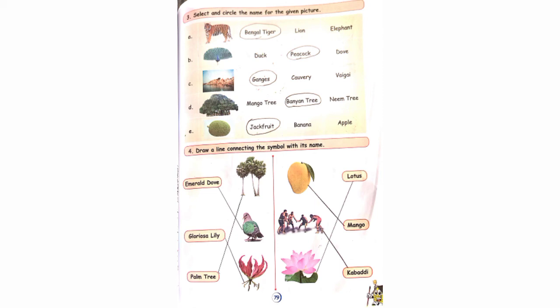Next one: Mango. For Mango, they have given picture first and names second. Both are the same. So draw a line from Mango to Mango, picture to word. Next: Kabadi, name to picture. Next: Lotus, picture to name.